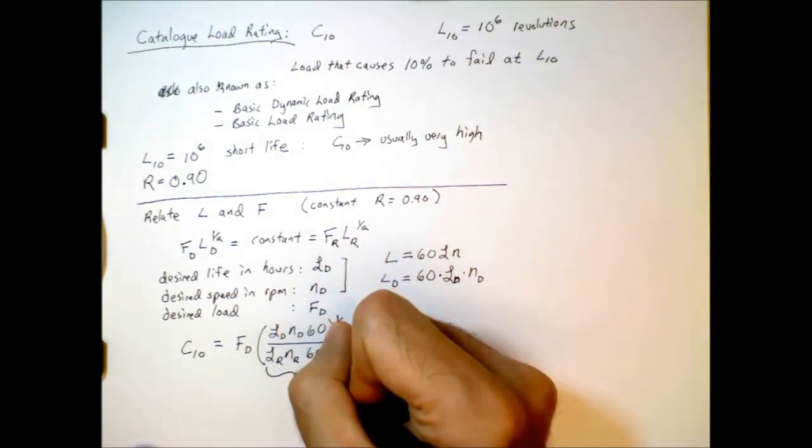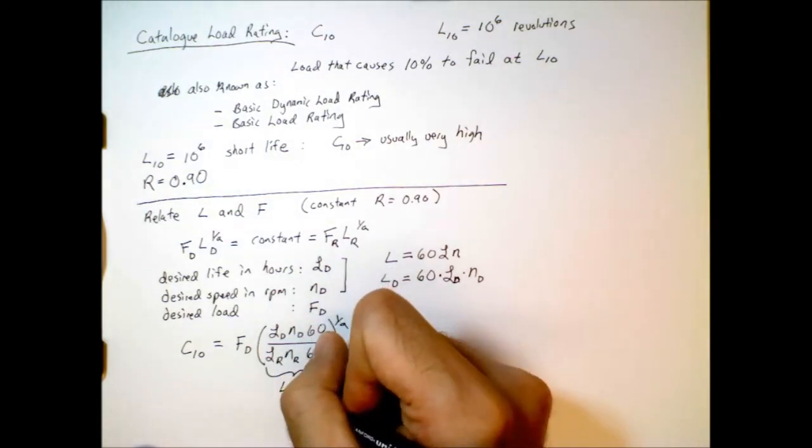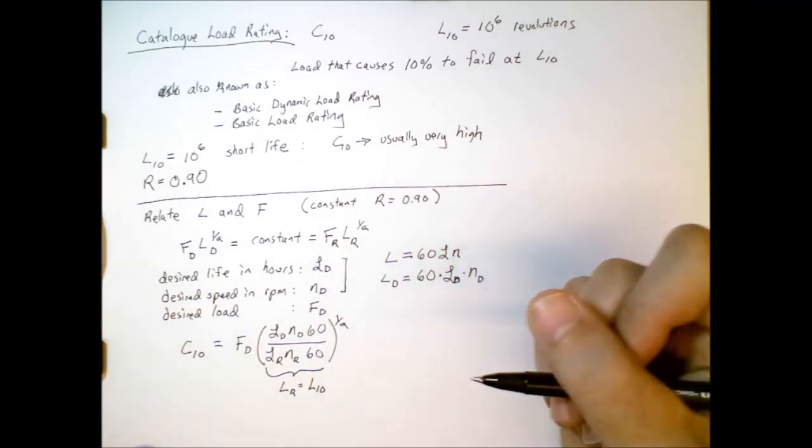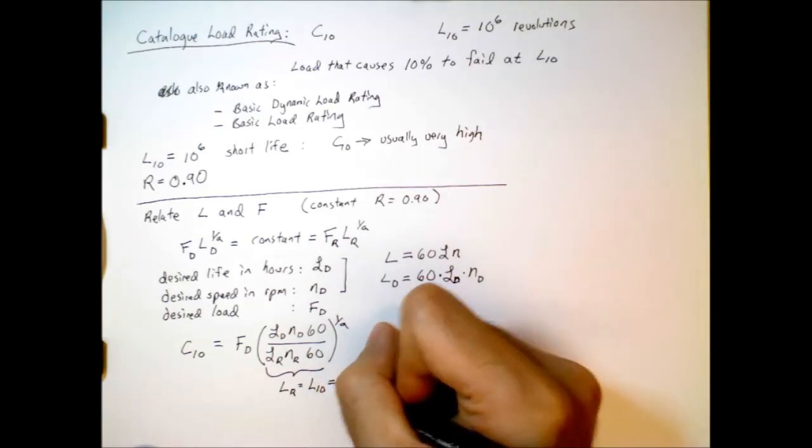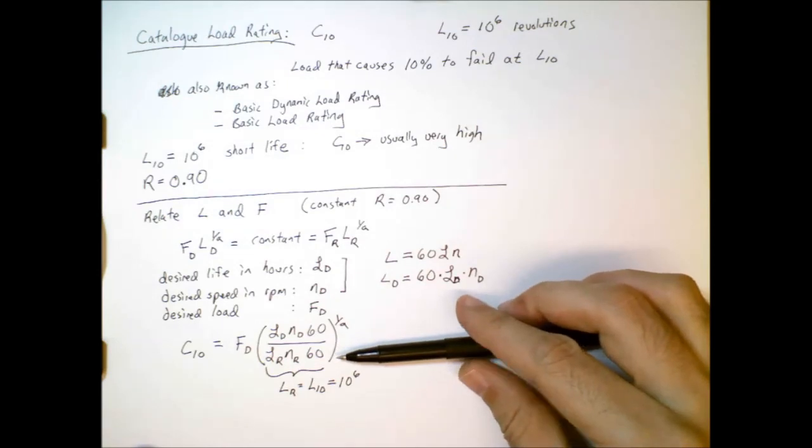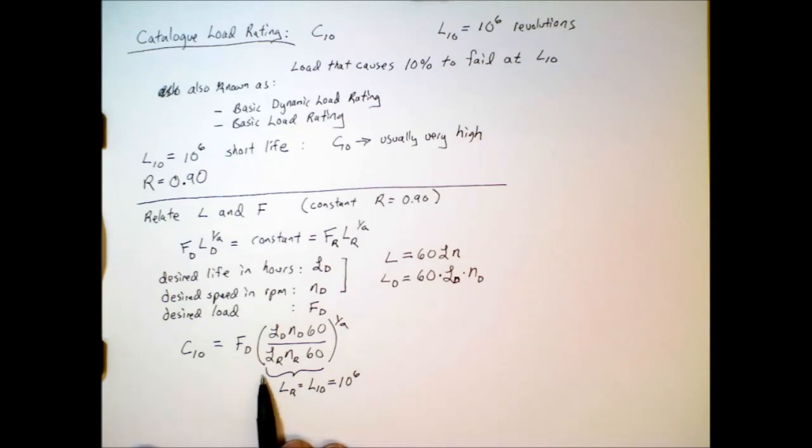Now, keep in mind, this value right here, L sub R times N sub R times 60, is really just L sub R or the L10 value. And in most cases, that is equal to 10 to the 6th revolution. So, usually we do not have the catalog life data split out in this way, where we have hours times RPM times 60. But instead, we usually just are told that the L10 life is 10 to the 6th.